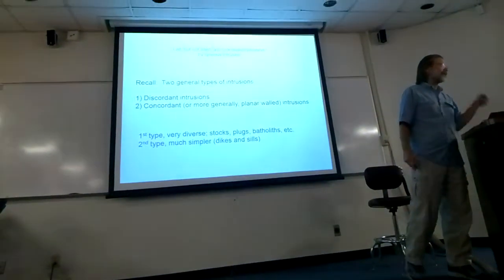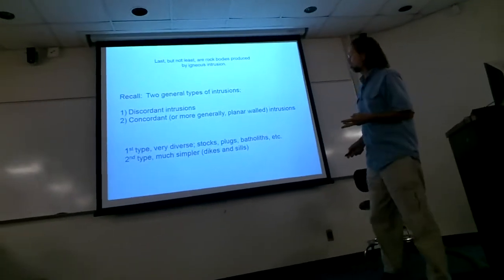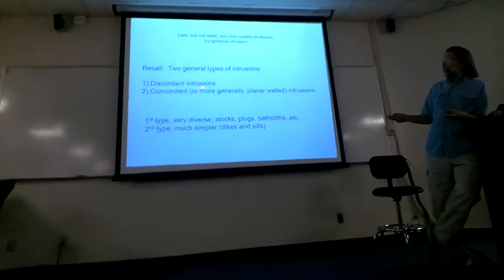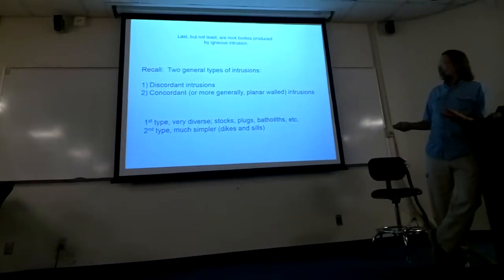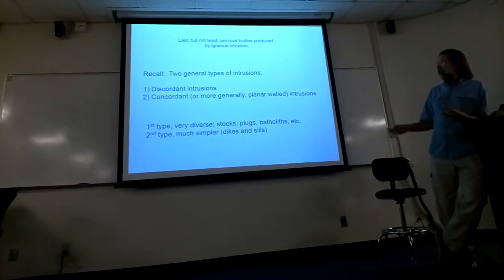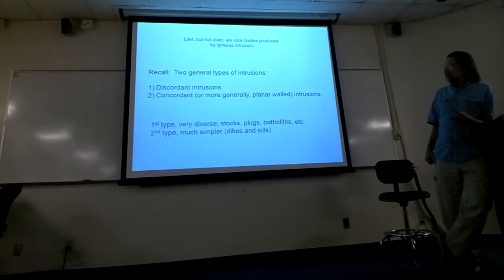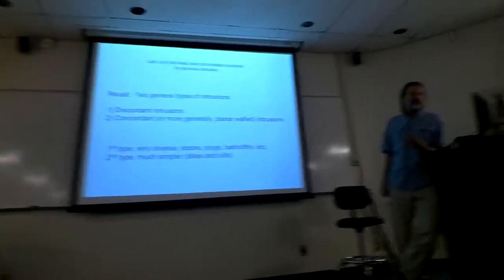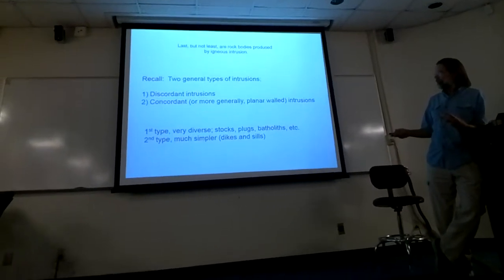The third type of contact that we didn't quite get to — we saw this in the field — is intrusive contact. It's the third of the primary types of geologic contact. There are two different kinds: discordant intrusions and concordant intrusions. One is more straightforward than the other, but the straightforwardness can be confusing in a certain context.